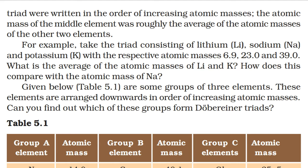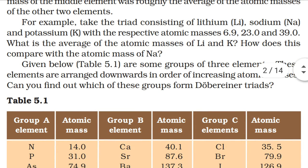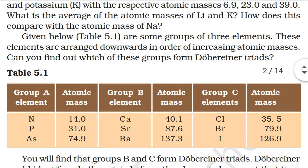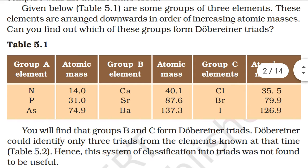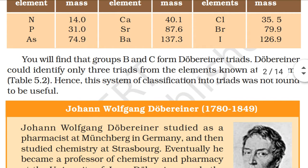For example, take the triad consisting of lithium, sodium and potassium with the respective atomic masses 6.9, 23 and 39. What is the average of the atomic masses of lithium and potassium, and how does this compare with the atomic mass of sodium? Some groups of three elements are arranged in order of increasing atomic masses — you will find that groups B and C form Dobereiner's triads.